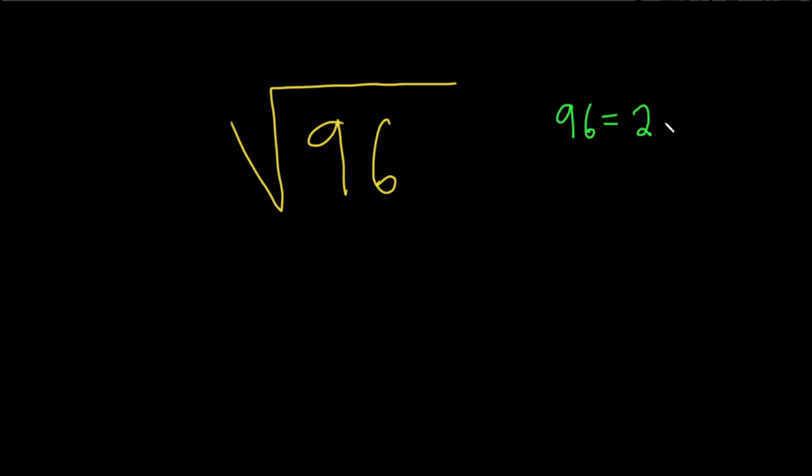what you can do is just start factoring. So 96 is actually 2 times 48. And then you can factor 48 as follows. This is 2 times, well, I guess 48 is 2 times 24, right?